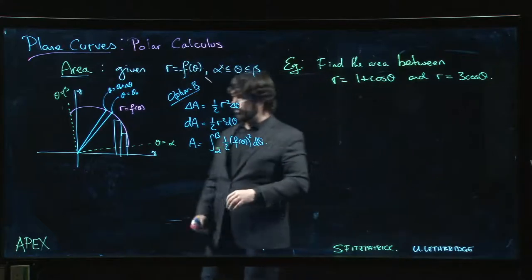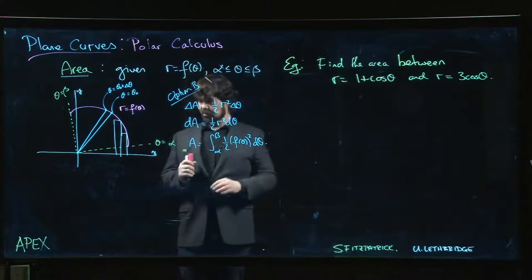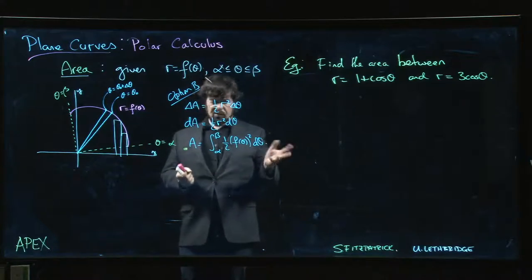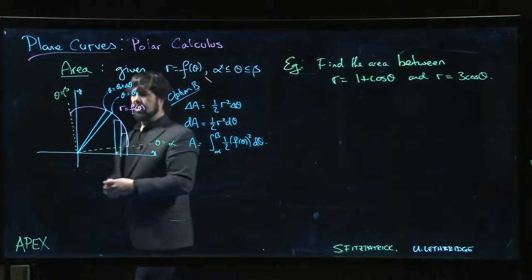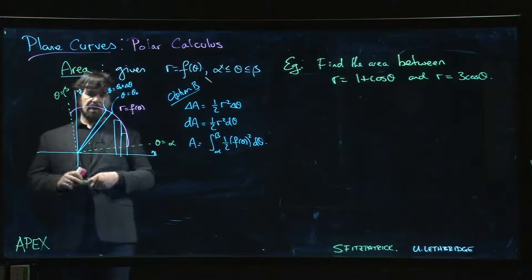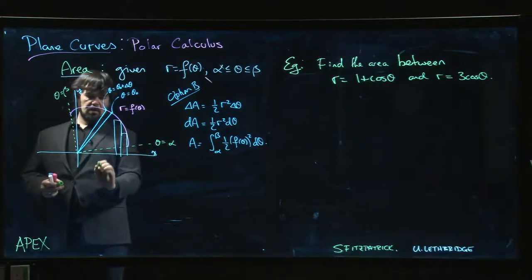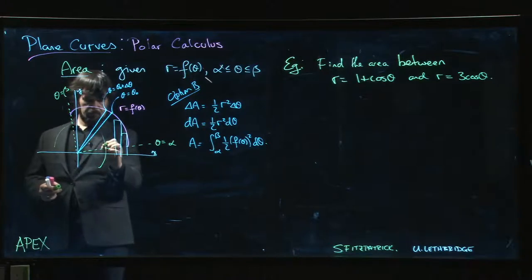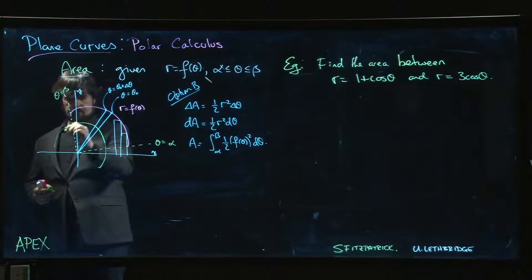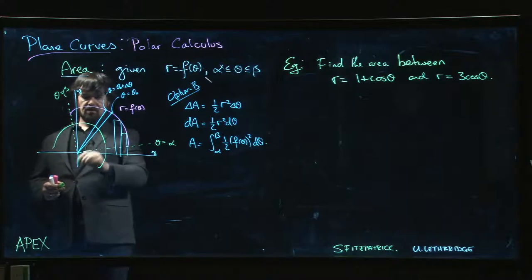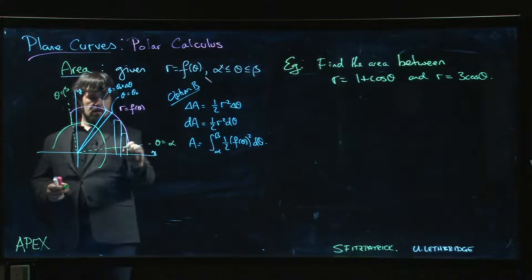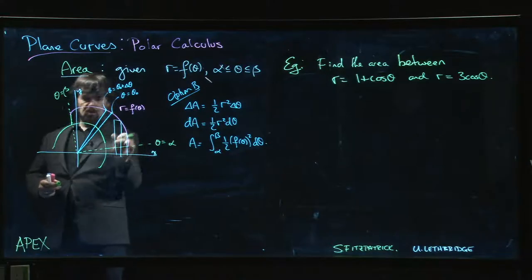So now we're going to look at finding area between polar curves. The idea is pretty much the same as if you're finding area between rectangular curves. If I add a second polar curve into this picture, something like this, coming around like that.